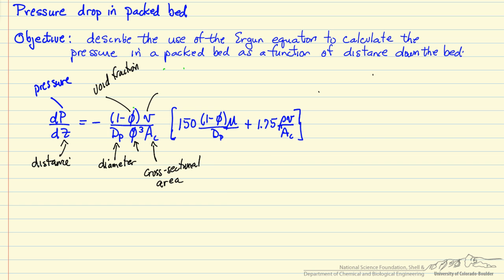And then the important term is the volumetric flow rate. So we increase the volumetric flow rate, we increase the pressure drop. There are two terms in brackets: the first term is contribution from laminar, and the second is from turbulent flow.